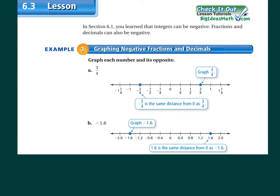On number one we have three-fourths that we're supposed to graph and its opposite. I'd rather have you draw a shorter number line to the left-hand side and put zero and then one — the integers that are around the number — and then put the correct placement of the number on the correct side.